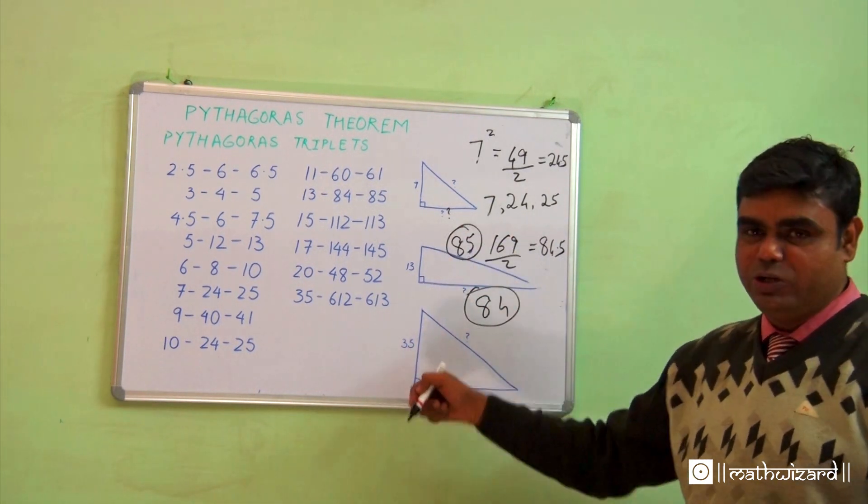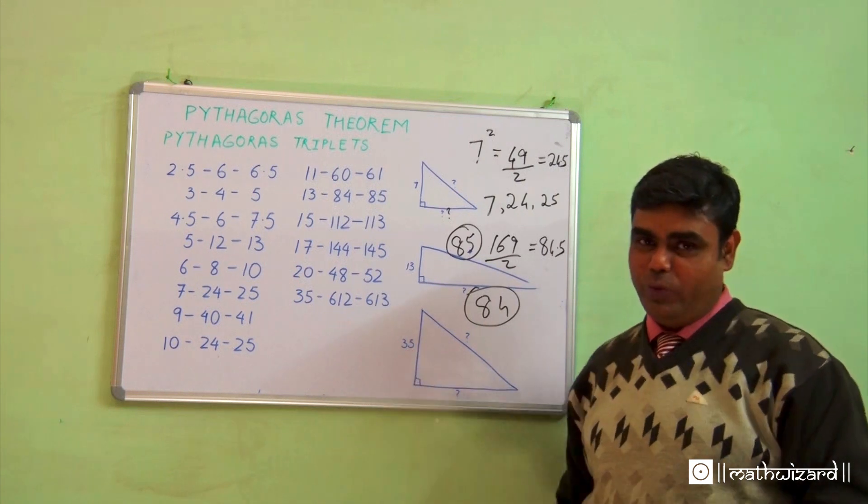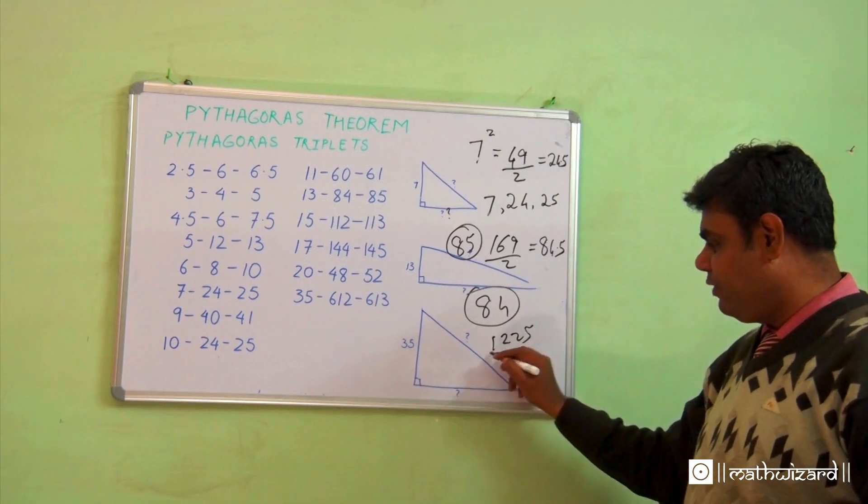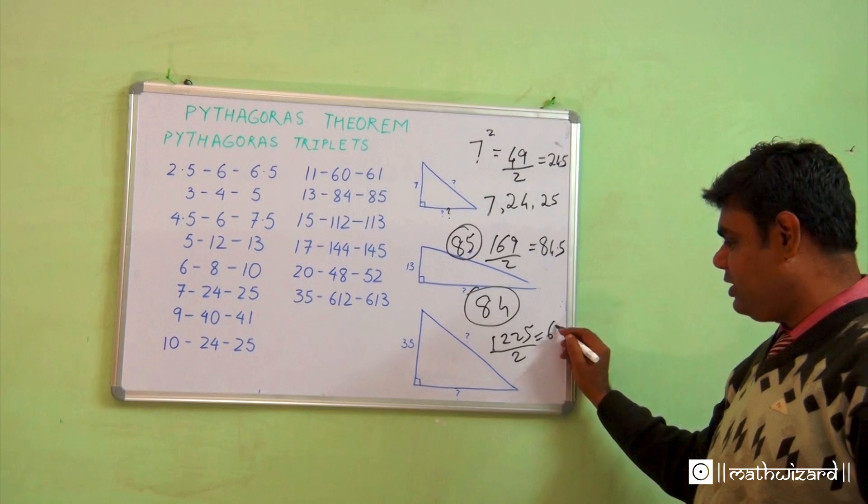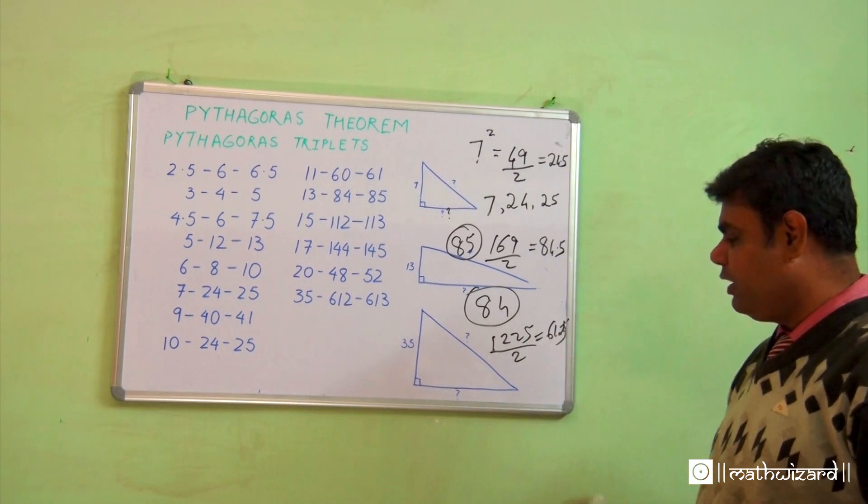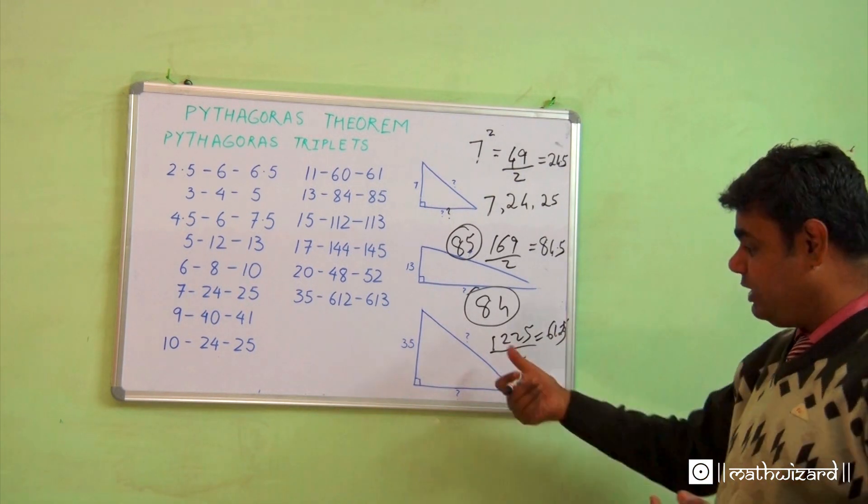35 square gives me 1225. Divide by 2 gives me 612.5. So can we guess out the answer? The bigger side is 613, the lower one is 612.